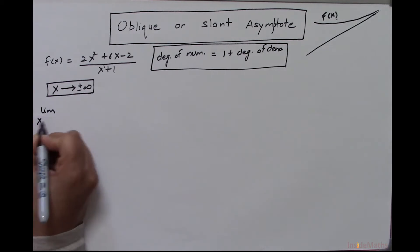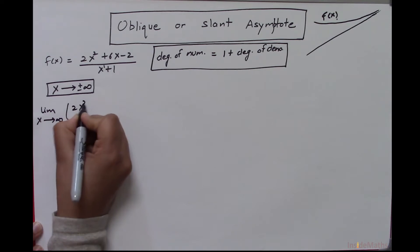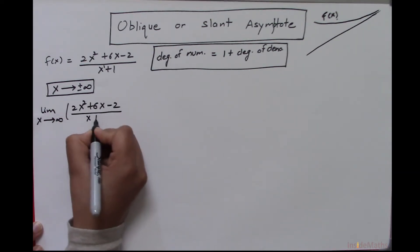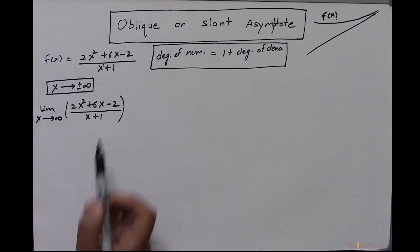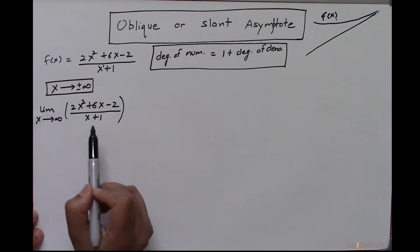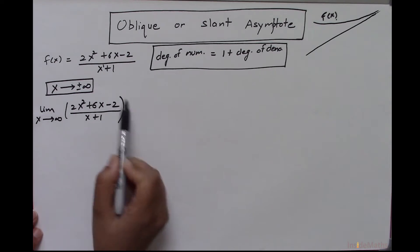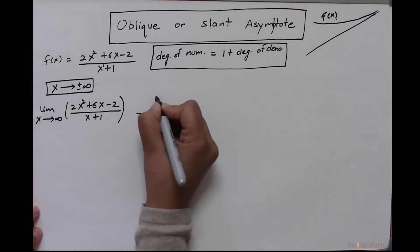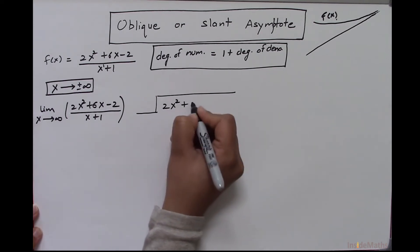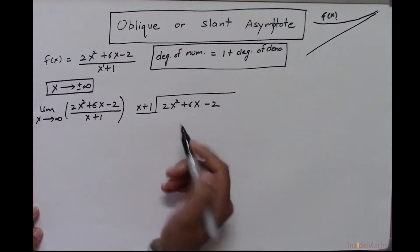To find it, I will take the limit as x approaches infinity of (2x² + 6x - 2) divided by (x + 1). To solve this limit, I will use the long division method to split this function. The dividend is 2x² + 6x - 2 and the divisor is x + 1.